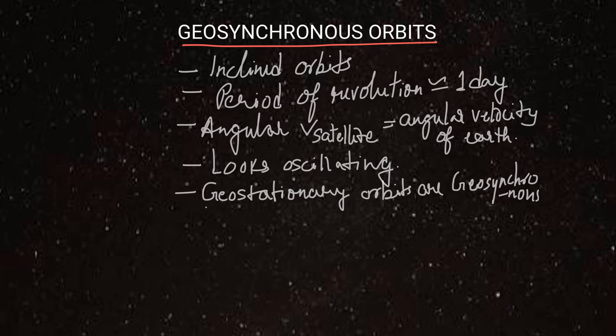Also, there can be only one geostationary orbit, because there is only one orbit which can lie exactly above the equator. But geosynchronous orbits can be many in number. These satellites are used for communication purposes. And the drawback is that they cannot cover polar regions.